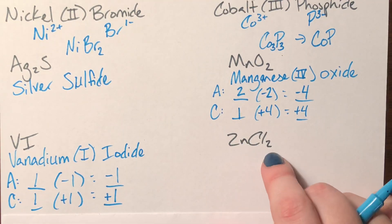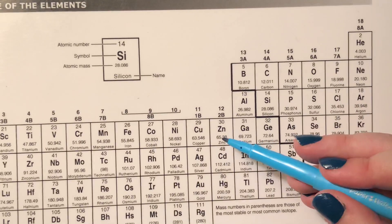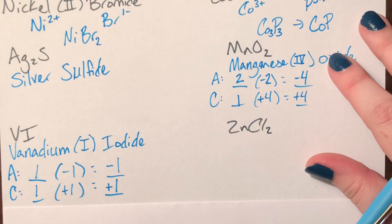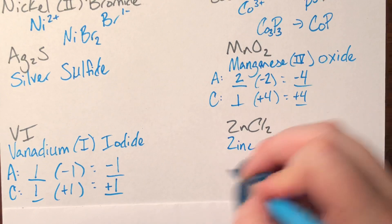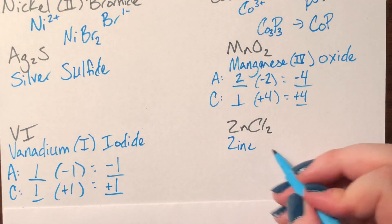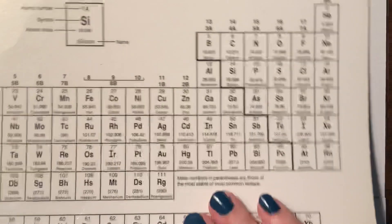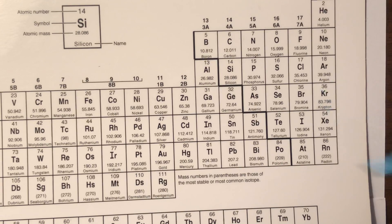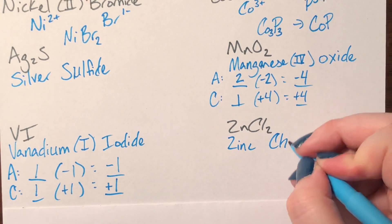Next is ZnCl₂. Zn is zinc, which is part of Katzenegel, so I do not have to tell you the charge — I just write the name. So we have zinc, no parentheses needed. I just need to figure out who Cl is: that's chlorine. Chlorine's ion name is chloride. So this is just zinc chloride.